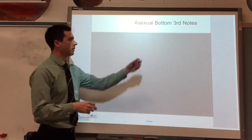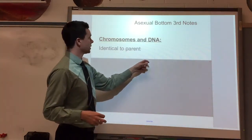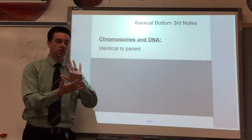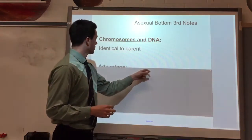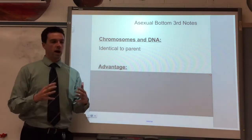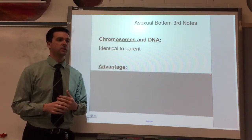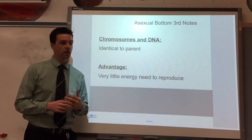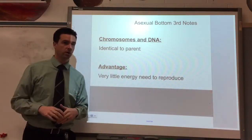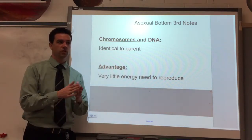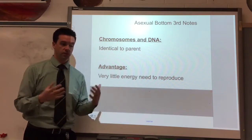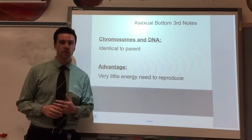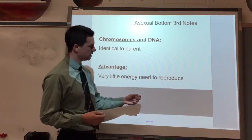Now on the bottom third, we're going to write a couple of notes. Genetically identical means the chromosomes and DNA from the parent to the offspring are the same. The main advantage of asexual reproduction is that you don't need a lot of energy to make it happen. You don't need to find a mate or a partner because you only need one organism — you just make a copy of yourself. That's the main advantage: it's pretty easy.